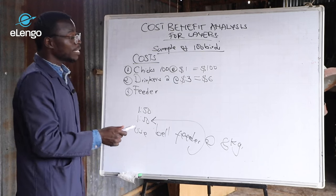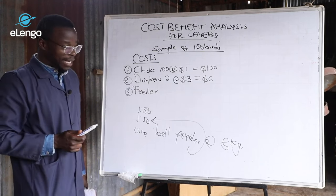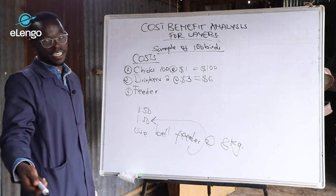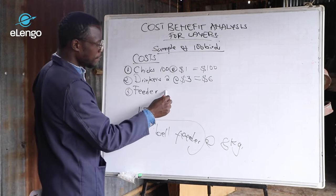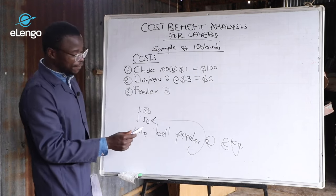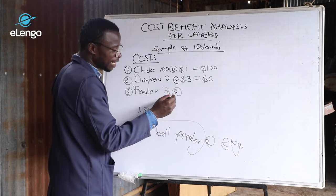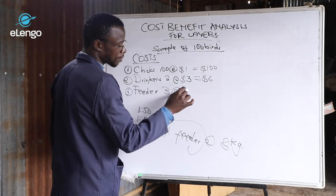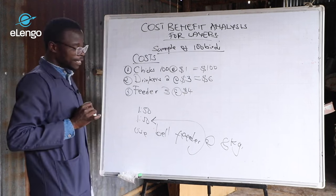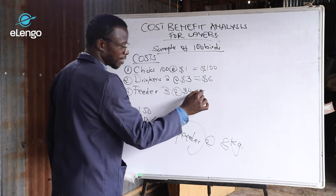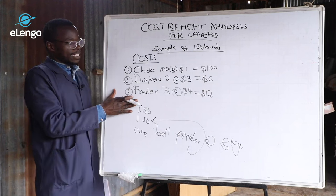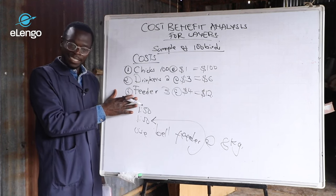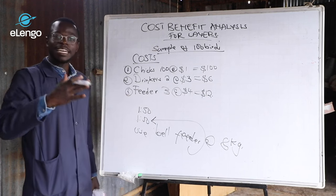Since we have 100 birds and we are going to feed them for quite some time, instead of buying two feeders, we can buy three feeders. Since the feeder is 8 kgs, it becomes a little bit more expensive — at $4 per feeder. So, it will be 4 times 3 to get $12. This is the total cost of drinkers and feeders. In this case, drinkers and feeders are the capital costs.